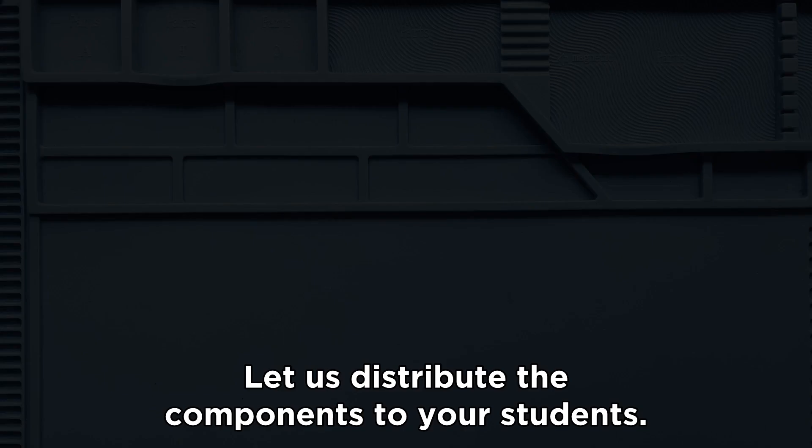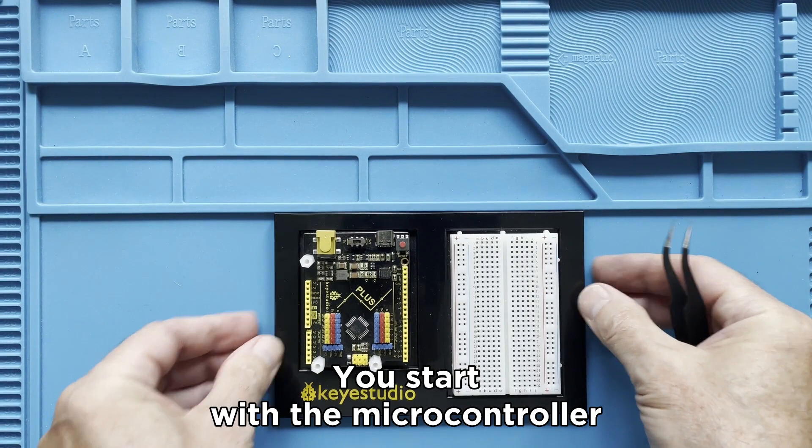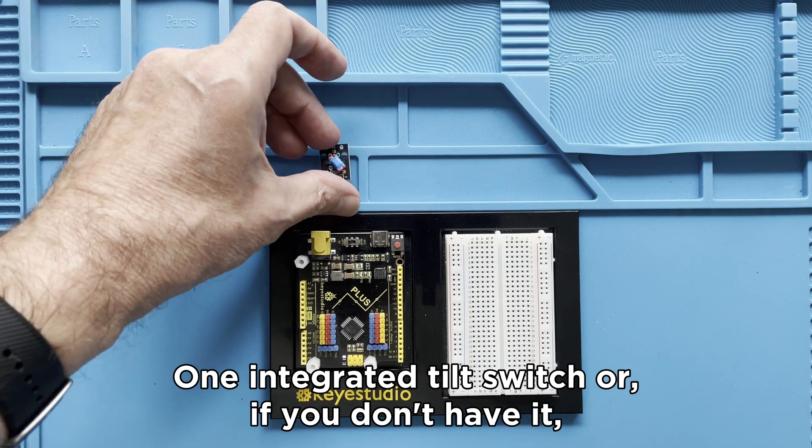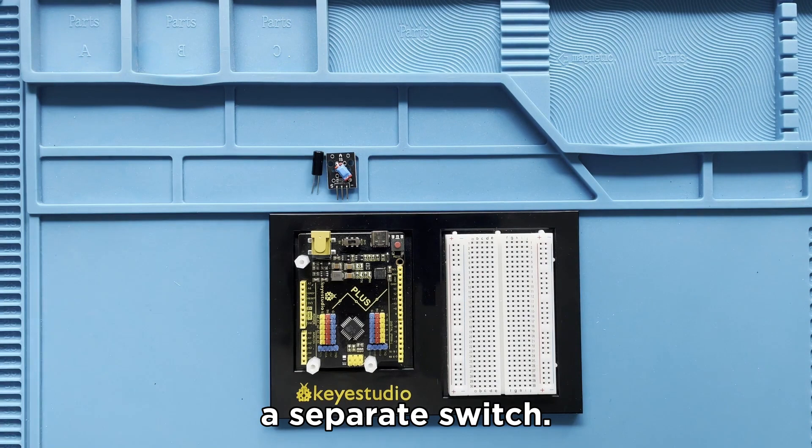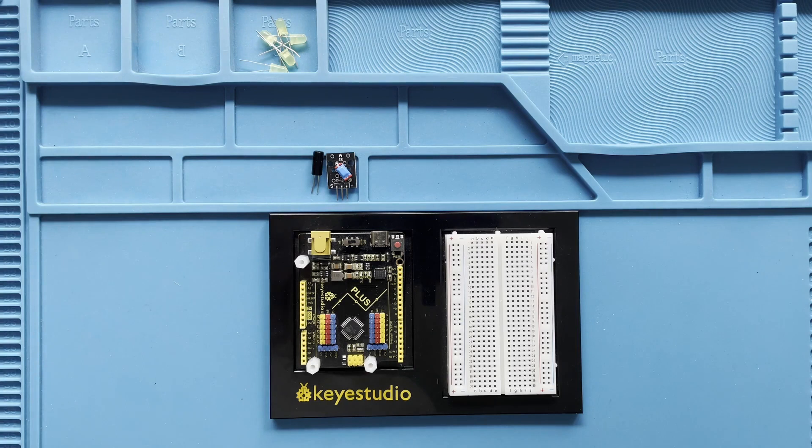Let us distribute the components to your students. We start with the microcontroller and the breadboard, one integrated tilt switch, or if you don't have it, a separate switch. Five LEDs, five resistors of 220 ohm. And in case you have a separate switch, a resistor of 10,000 ohm is also needed.